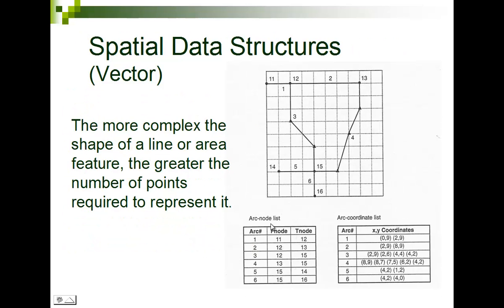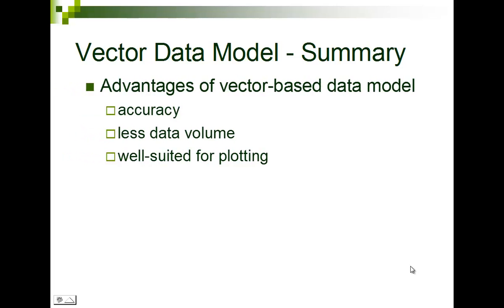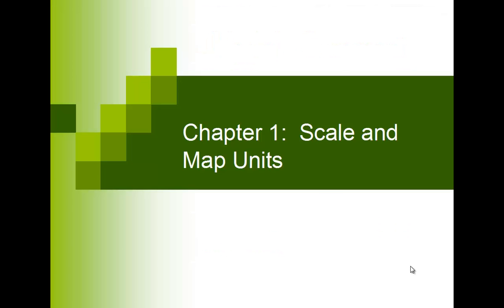It gets really complex really quickly using a lot of precision, i.e., decimal points. You can start to see this is how we store a polygon. In summary, the vector data model has a lot more accuracy and less data volume — it's well-suited for plotting. But the disadvantage is how do we represent continuous fields? How do we represent temperature in vector data? We can use isohyets — lines of equal temperature — or isobars, or polygons. We really need to figure out which data model to use.